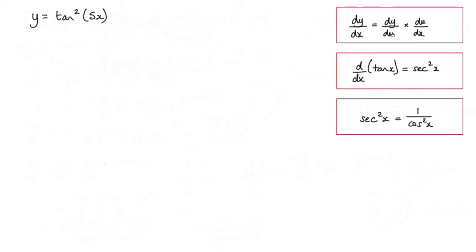Now we are going to be using the chain rule. And the first thing I want to do is to make a substitution. So let u equal tan of 5x. Now we can differentiate that to get du by dx, which will be 5 sec squared 5x.